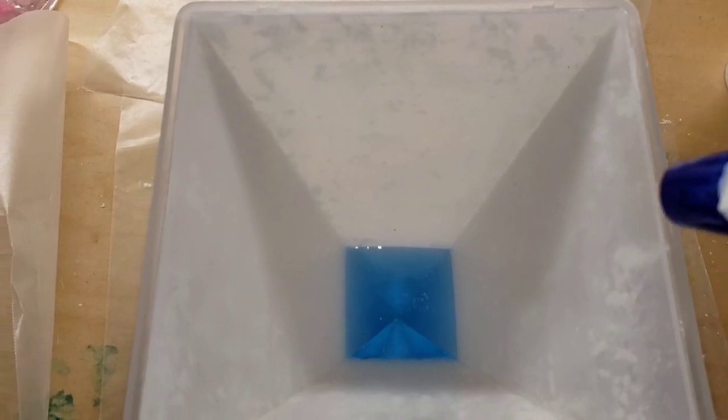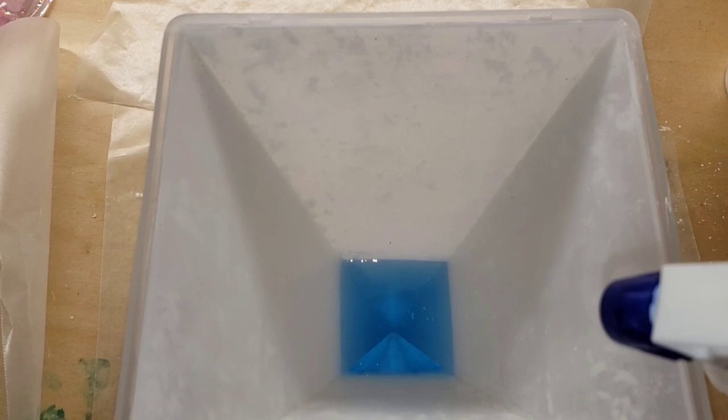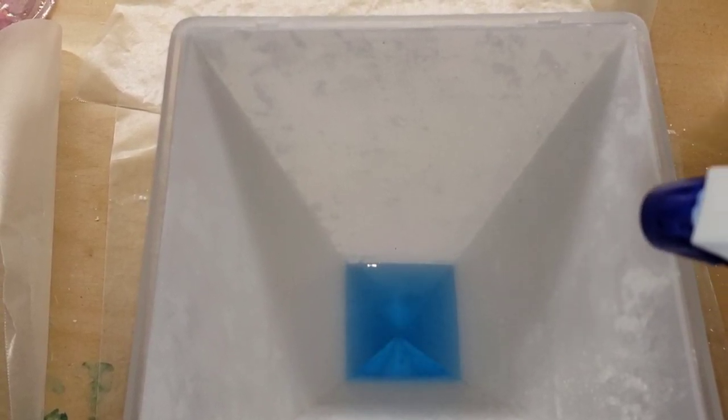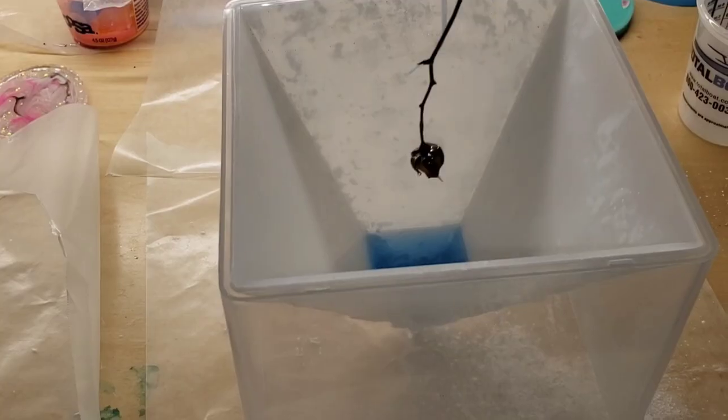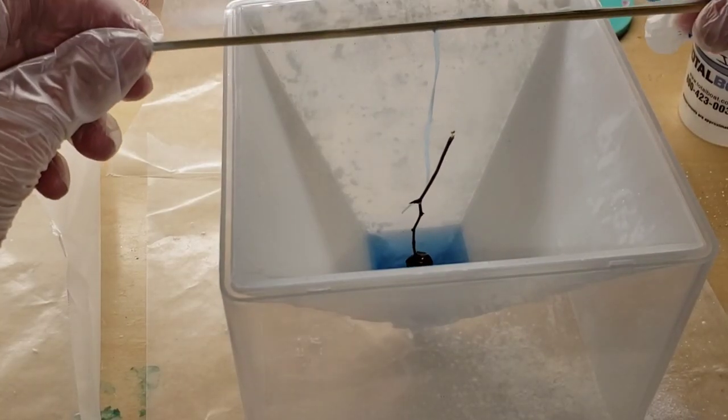This is kind of tricky because you are going to get bubbles just because of the way the pyramid's shaped. So I'm going in with some 91% isopropyl alcohol, spraying those bubbles, and they pop right away. You don't want to add a ton of heat to your molds because it can damage your molds.